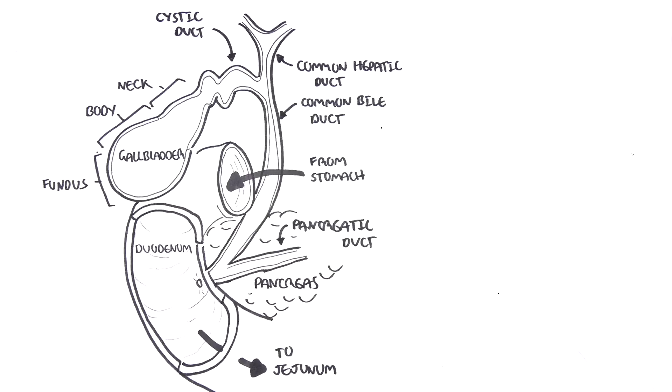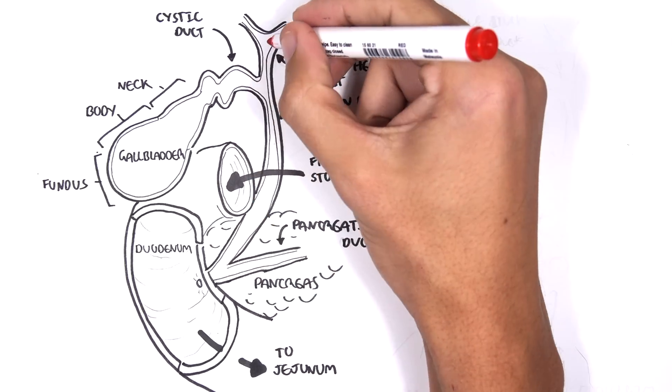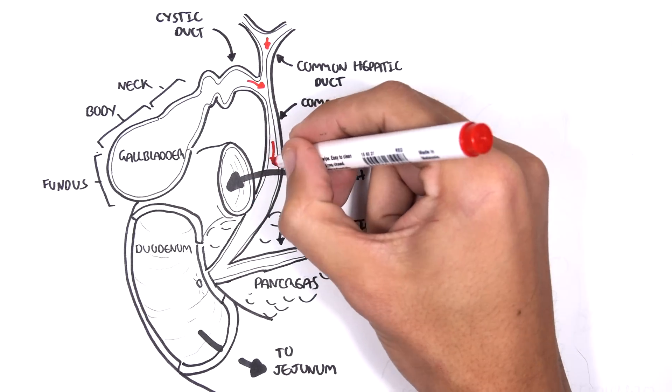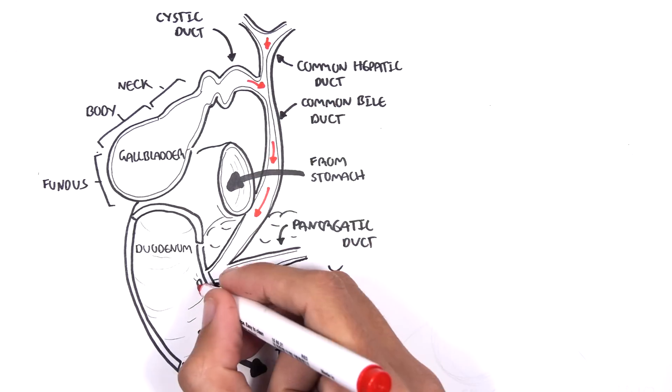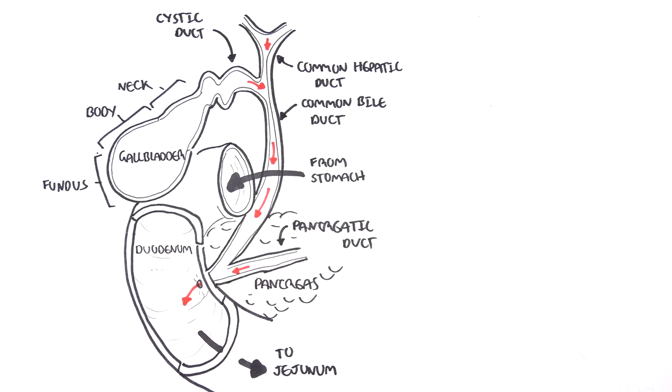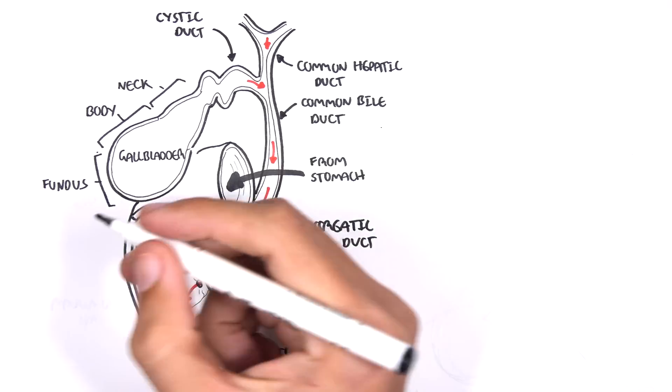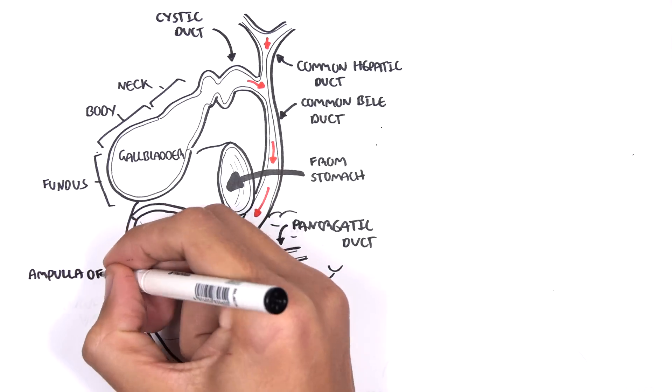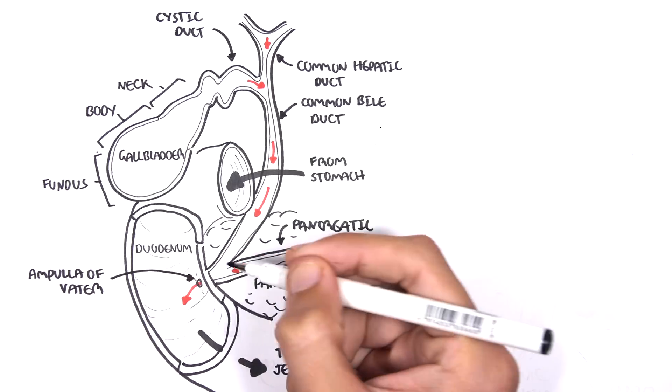Essentially, the gallbladder will contract and release bile, or the liver will release bile, which will go down and end up in the common bile duct. The common bile duct runs all the way down and joins with the pancreatic duct from the pancreas. The newly formed duct will then release this bile and the enzymes from the pancreas into the duodenum through the ampulla of vater to help digest food.